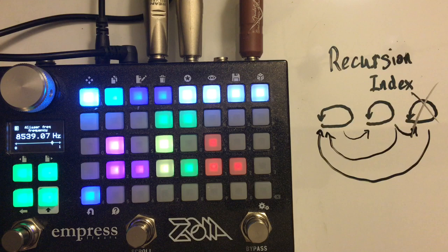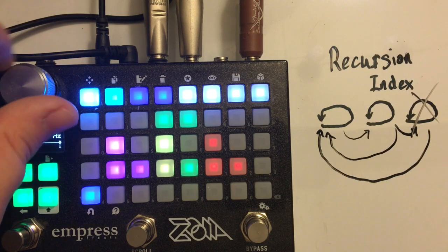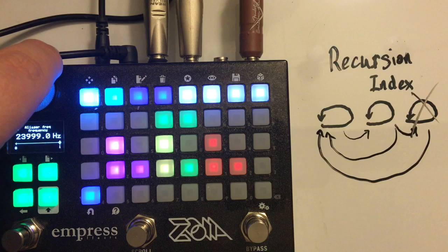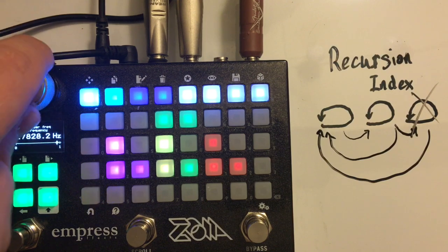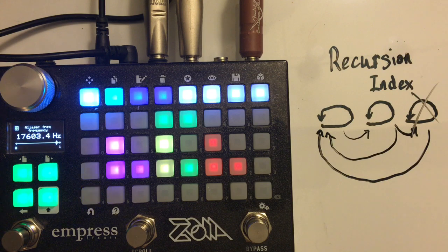When audio comes in you can process it through an aliaser. I really like aliasers — not just because they add a lo-fi quality but because they can bring out some really interesting harmonic structure. You can use it or not; if you want to disable it just set the frequency to 24,000 Hz. But a little bit can give it a sheen and bring out almost a brilliance in the sound.